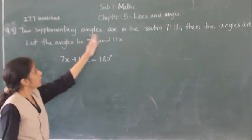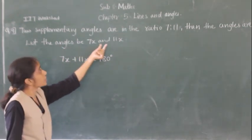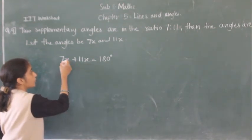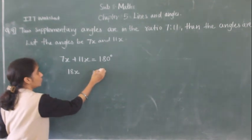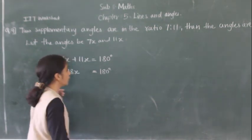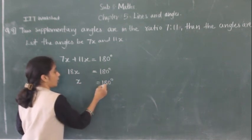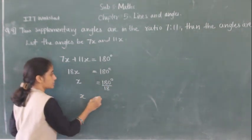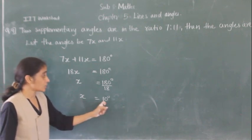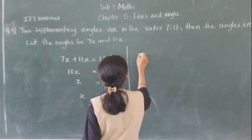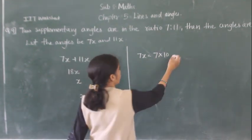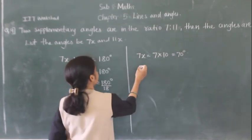These are two supplementary angles with ratio 7 to 11, so let the angles be 7x and 11x. Adding: 7 plus 11 is 18, so 18x equals 180 degrees. Transferring 18 to the right-hand side it becomes a divisor: x equals 180 divided by 18, so x equals 10 degrees. The angles are: 7x equals 7 times 10 equals 70 degrees, and 11x equals 11 times 10 equals 110 degrees.